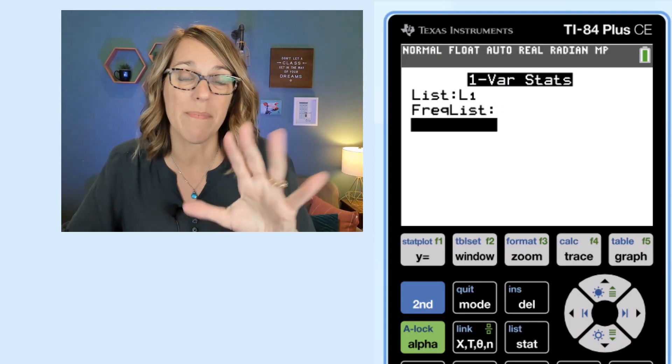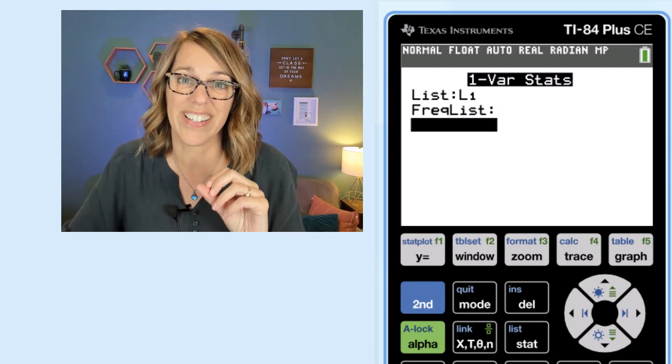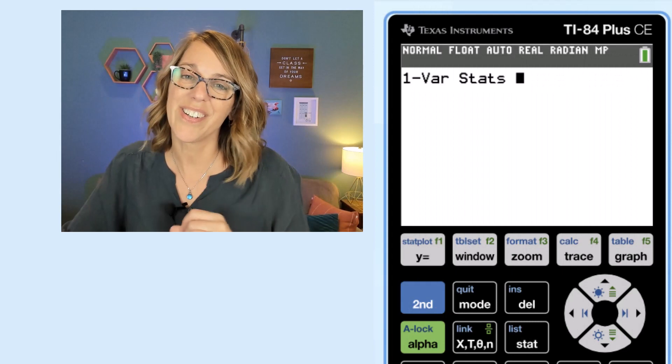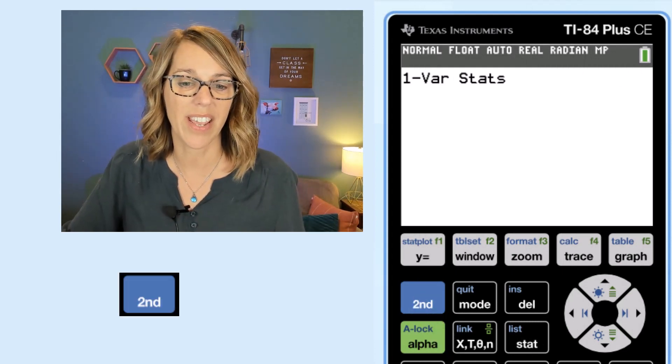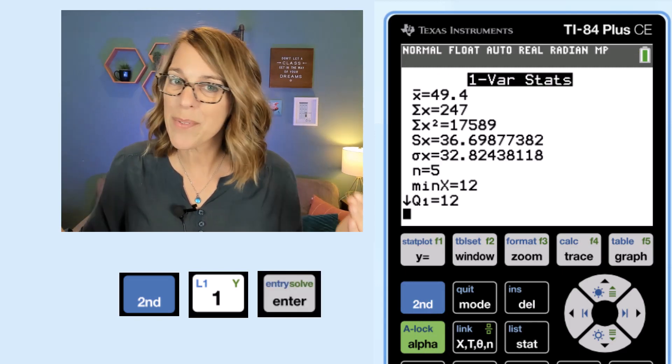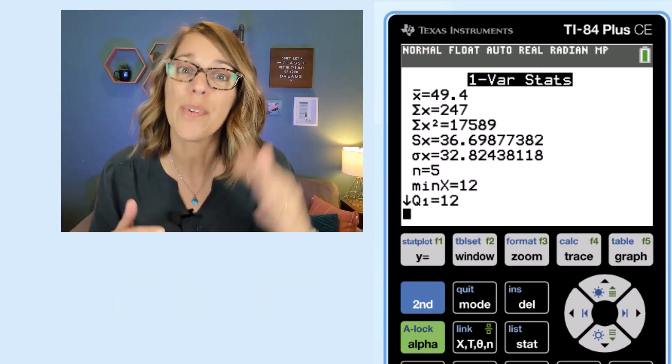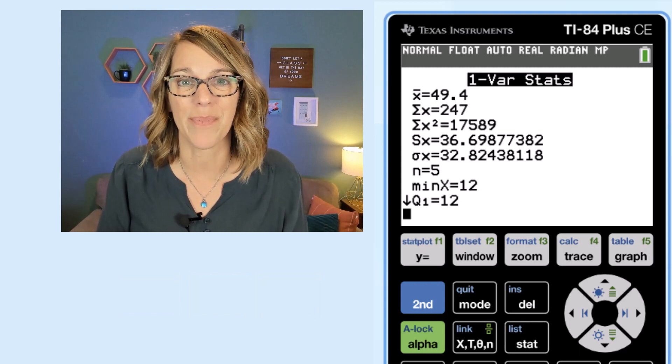Now if your calculator looked different than mine, you're going to do this: without that menu it only needs to know the list name. My values are in L1 so I'm going to go second followed by one and then enter. Either way we're both going to end up here with our list of statistical measures.